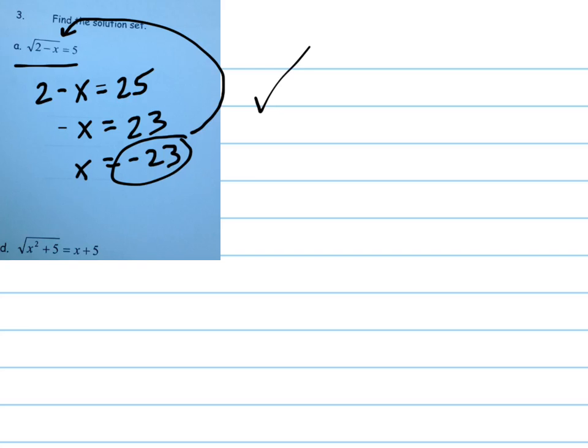Let's try this one down here, letter D. Again, I'm going to square both sides, so that's x squared plus 5 equals x plus 5 quantity squared.